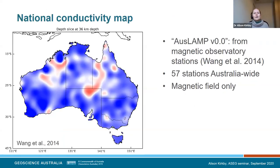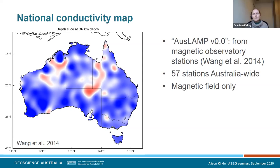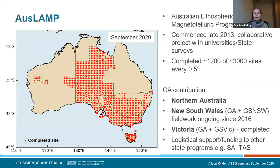A first attempt at a national conductivity map was put together by Li-Juan Wang and others at GA. They used magnetic observatory stations to estimate conductivity structure across Australia — only 57 sites, giving a low resolution view of the continent. It's also magnetic field only, whereas MT gives us the electric field component as well. With Auslamp we're going to get quite a significant increase in resolution.